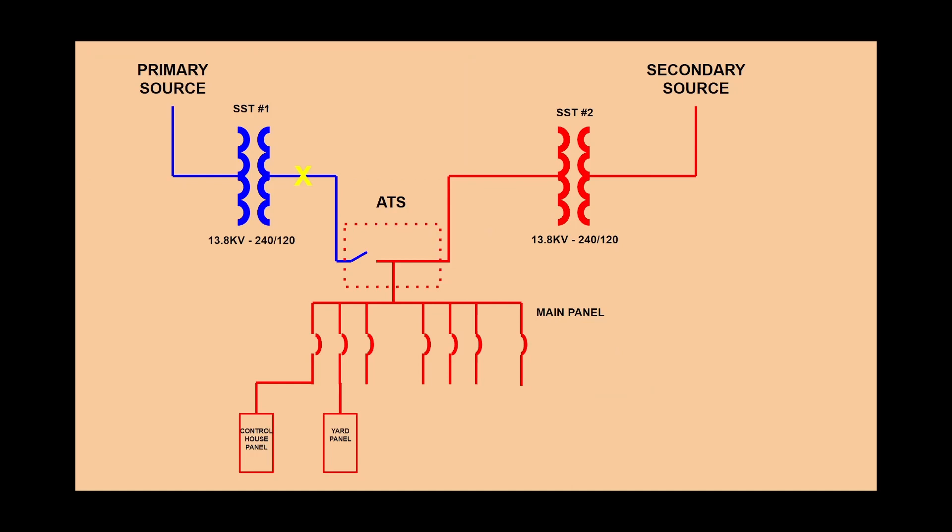Finally it continues downstream to the main panel, control house, and yard panel. And by the way all the auxiliary loads mentioned connect to either the yard panel or the control house panel.